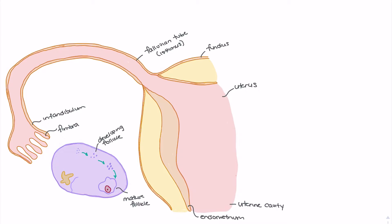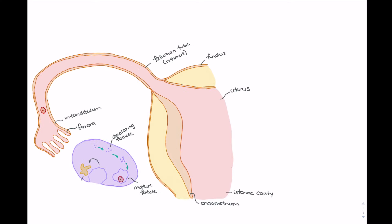The follicle grows to the point where its membranes burst, releasing the ovum into the pelvic peritoneum. From there the ovum floats through the peritoneum until it is swept up by the fimbriae into the infundibulum. Following release of the ovum, the corpus luteum forms, made up of the decaying membrane of the mature follicle. Importantly, the corpus luteum releases hormones that prevent menstruation from occurring until fertilization.